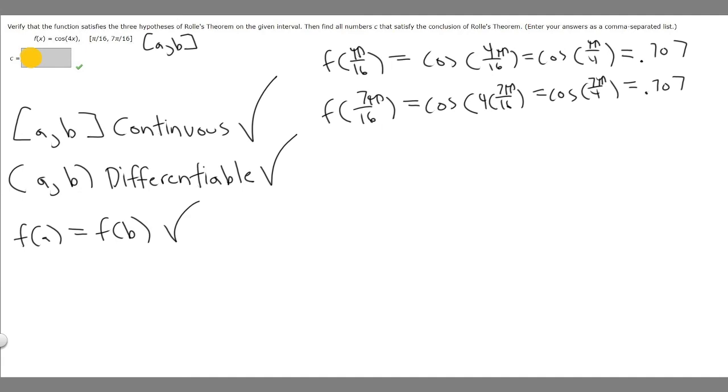Now let's do what Rolle's theorem actually tells us. Rolle's theorem tells us that F prime of C is equal to 0. Let's just take the derivative of this and set it equal to 0. So we have F of X equals the cosine of 4X.